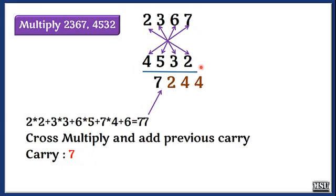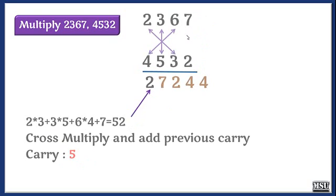Next step, we are going to leave this 7 as well as we are going to leave this 2. So 3 cross multiplications. Here you see 2 into 3, 4 into 6, 3 into 5, the carry plus the result, it is 52. It is 5 carry, 2 is the result.